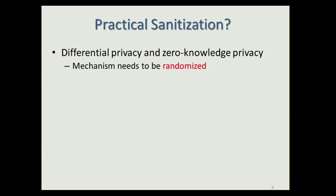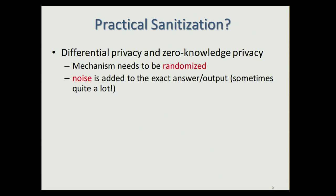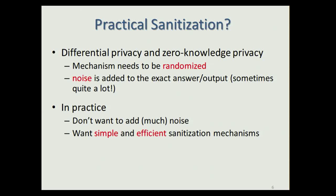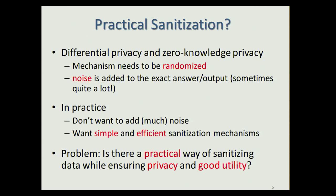Both differential privacy and zero-knowledge privacy require the database mechanism to be randomized, and noise needs to be added to the exact answer — sometimes quite a lot of noise. In practice, however, we don't want to add much noise; we want simple and efficient sanitization mechanisms. This leads to the following question: is there a practical way of sanitizing data while ensuring privacy and good utility?